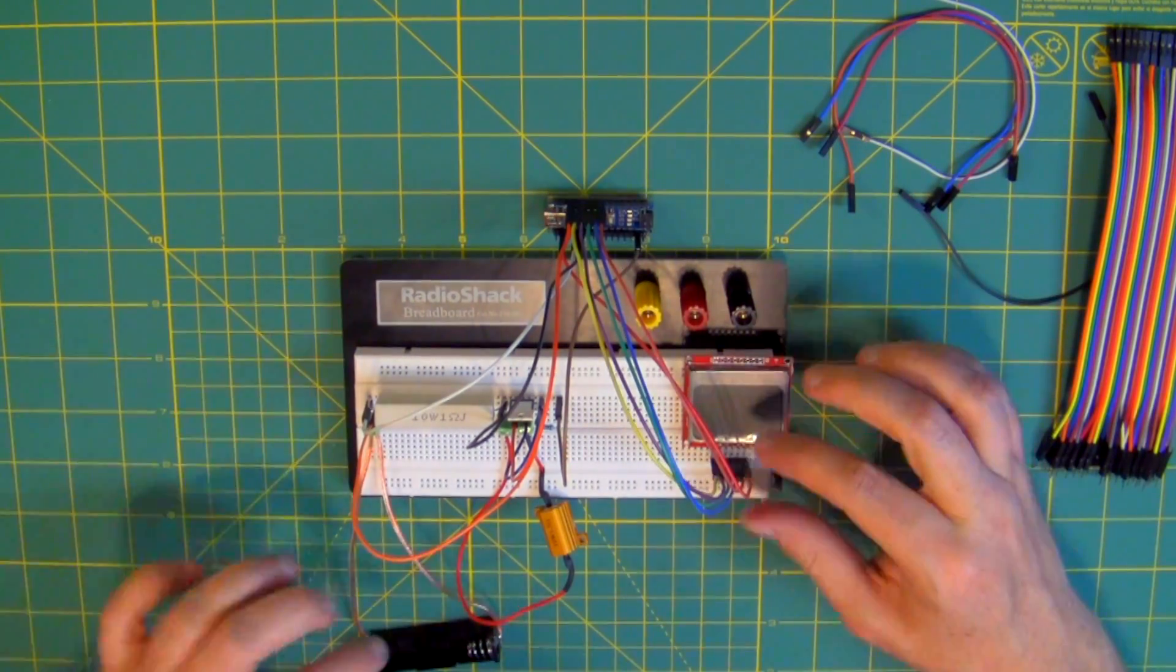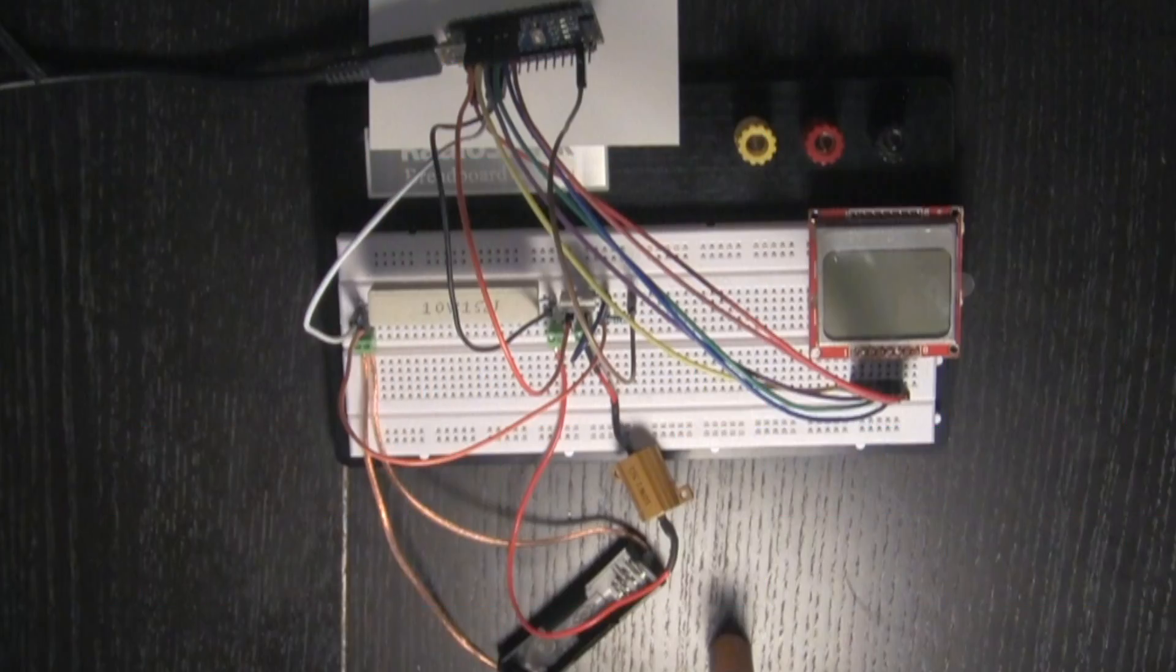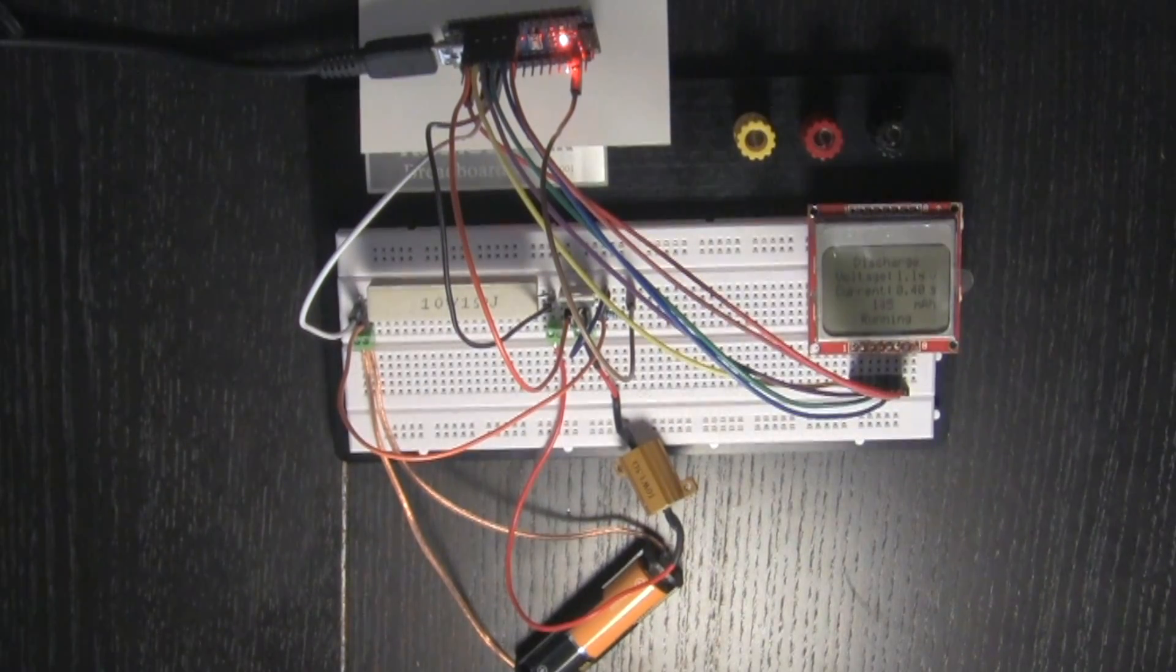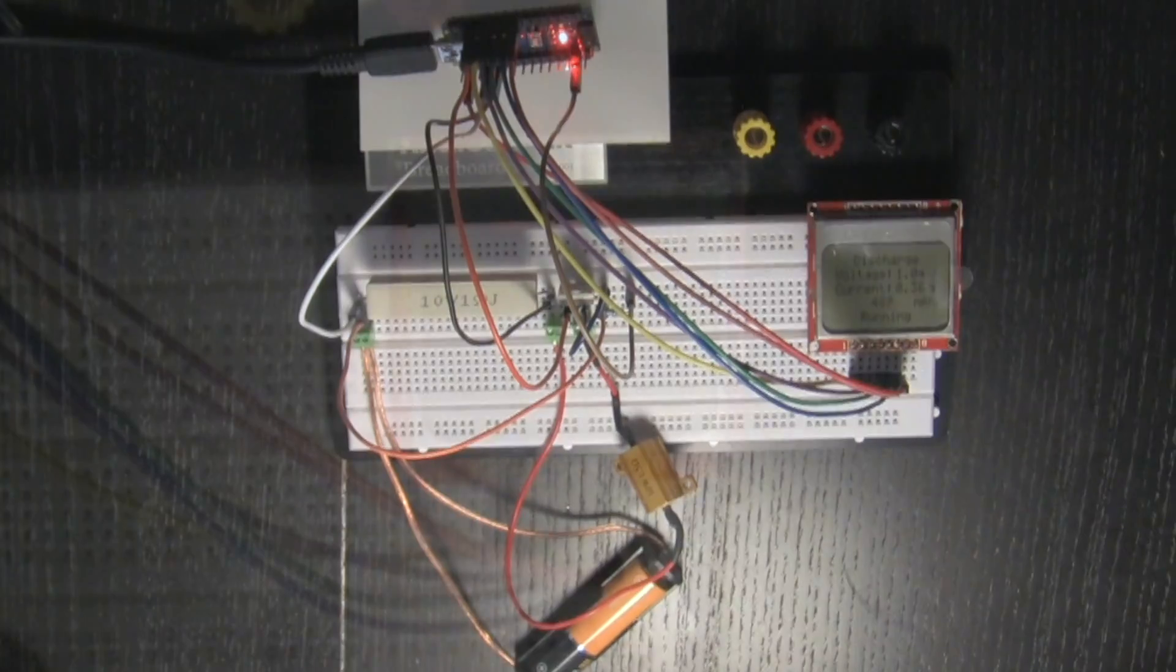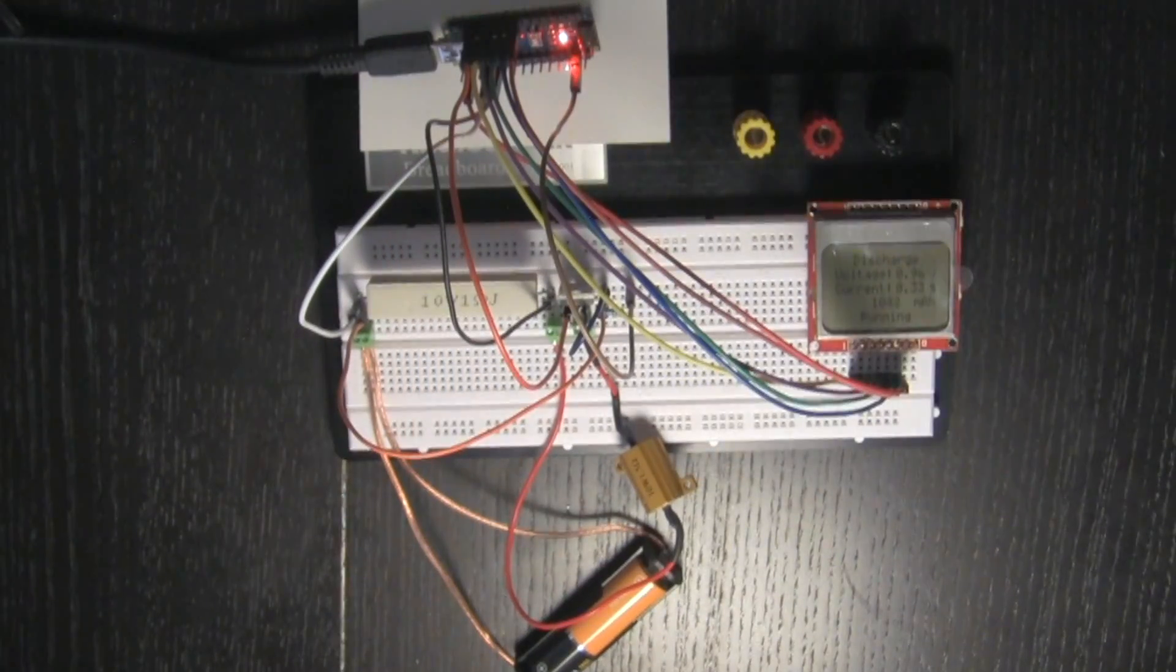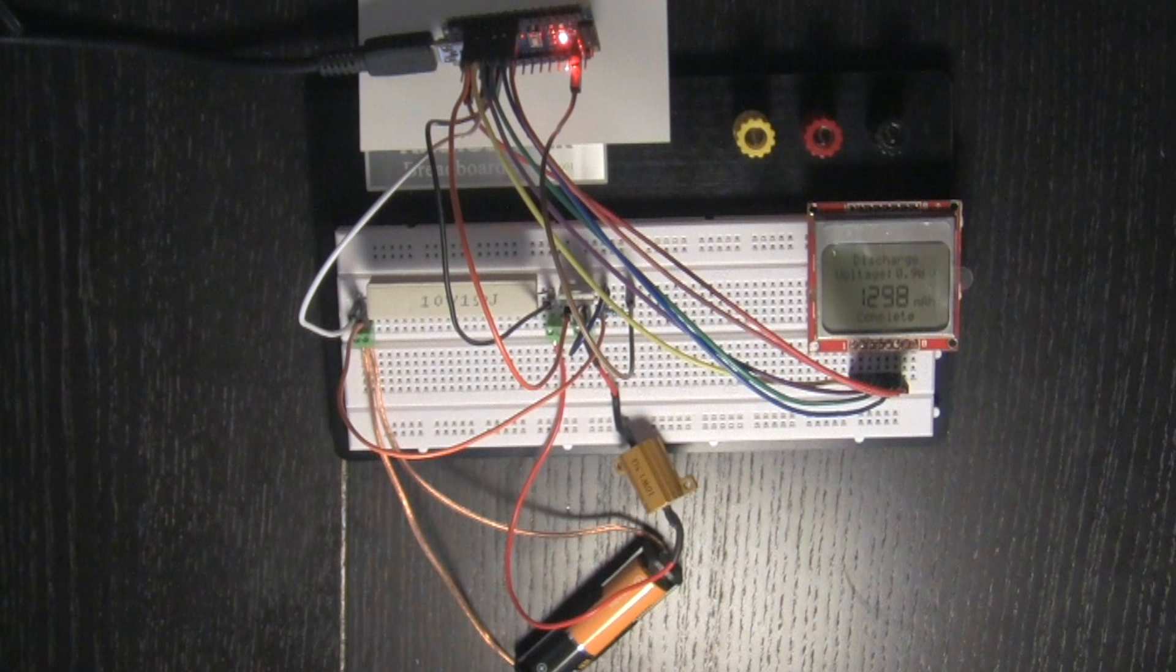Now that we're all wired up, let's test this thing out. I'm going to throw a standard alkaline battery from Harbor Freight on here just to make sure everything works. It doesn't really matter the chemistry though, we're really just concerned with the voltage and the capacity for testing purposes. Fantastic! Looks like everything works, so now I can solder everything to a circuit board and have a proper tool.